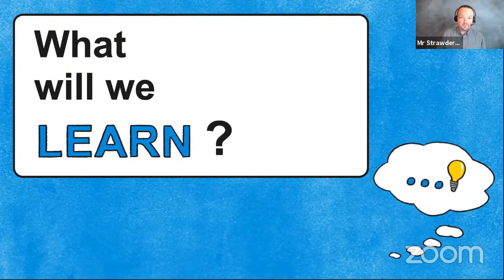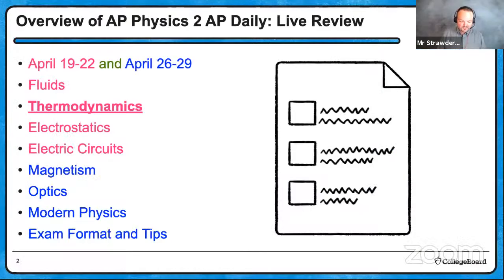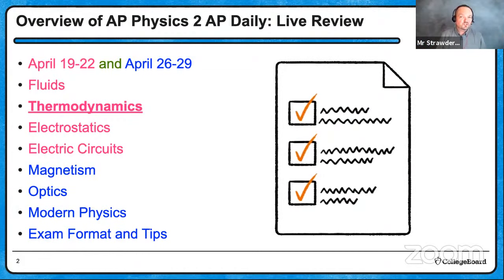We're going to do a quick overview of our plans for the next two weeks. Yesterday we talked about fluids. Today we're doing thermodynamics, unit number two. Tomorrow I'll cover electrostatics, then my good friend Mr. Mancino from Connecticut will do circuits, magnetism, optics, and modern physics. Then I'll come right back at the very end and do some exam format tips and tricks.